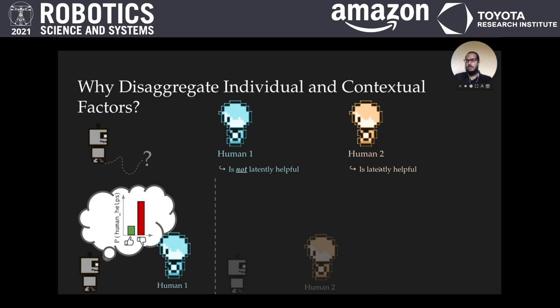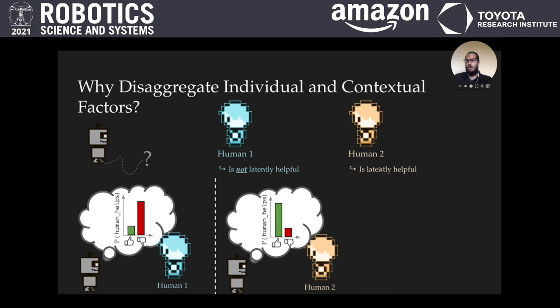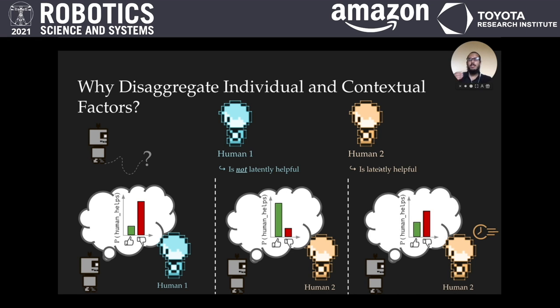If it encounters human 2 when they're on a break, it should predict that they're likely to help. However, if it encounters human 2 when they're busy, it should recognize that even though they're a latently helpful individual, due to contextual factors, they're unlikely to help at the moment.